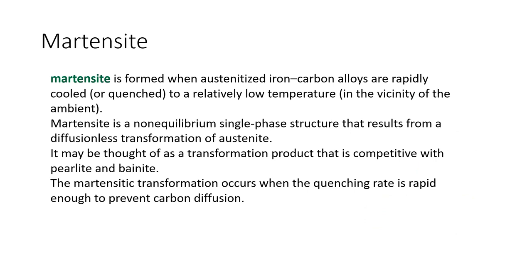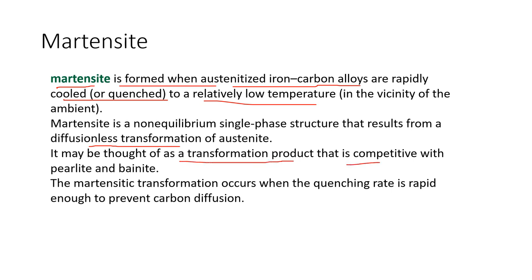Martensite is formed when austenite iron-carbide alloys are rapidly cooled or quenched to a relatively low temperature. In the previous diagram, the martensite 50% and 90% regions are located extremely to the right, representing rapid cooling within seconds. Martensite is a non-equilibrium single-phase structure that results from a diffusionless transformation of austenite. It may be thought of as a transformation product competitive with pearlite and bainite. The martensite transformation occurs when the quenching rate is rapid enough to prevent carbon diffusion.